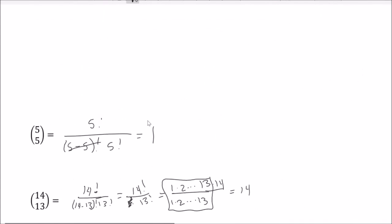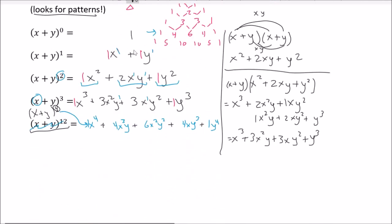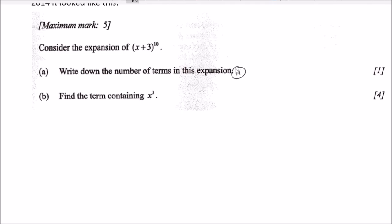First question: how many terms are there in this expansion? Back at the beginning, something to the zero had 1 term, first power had 2 terms, second had 3, third had 4, fourth had 5. The pattern is always the exponent plus one. So for x plus 3 to the 10th, the answer is 11 terms.